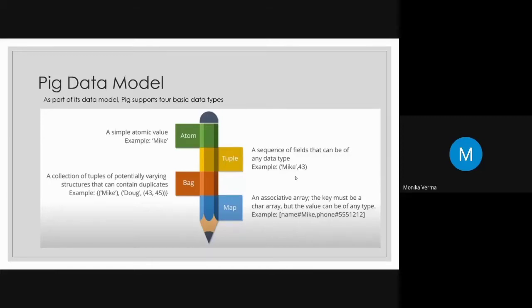The Pig data model supports four basic types: atom, tuple, bag, and map. These are the four basic data types in Pig.